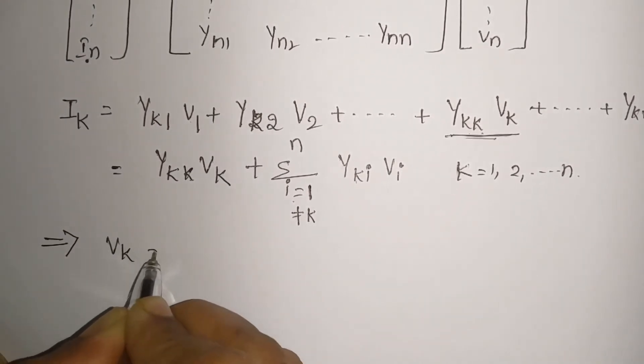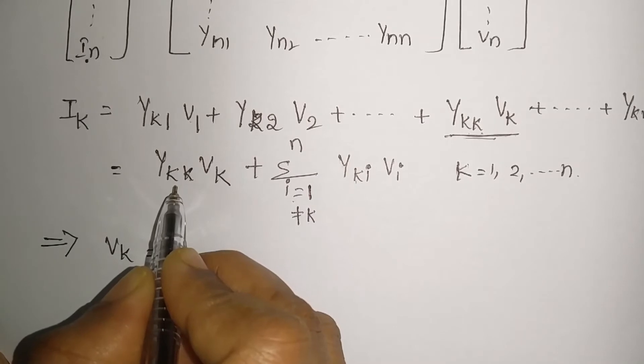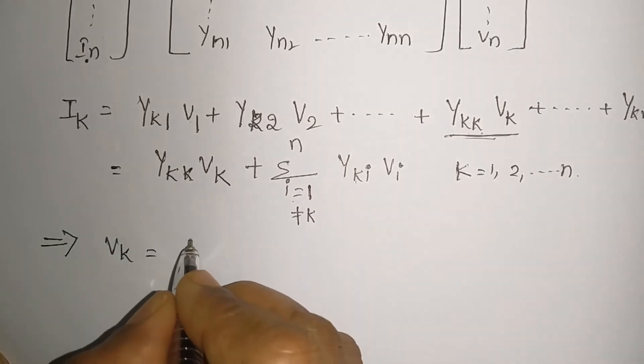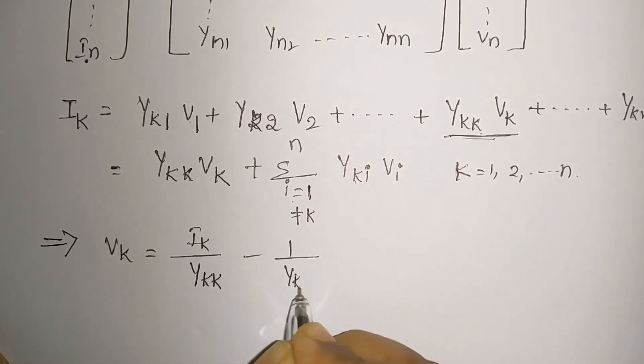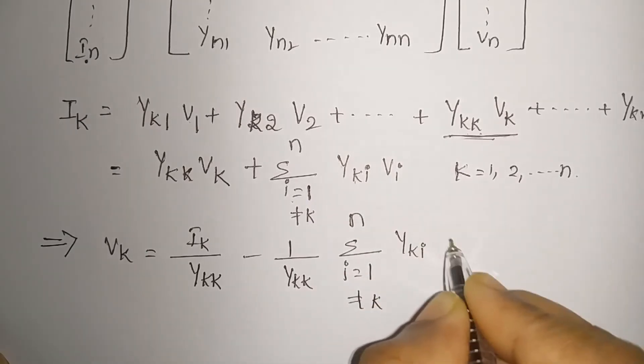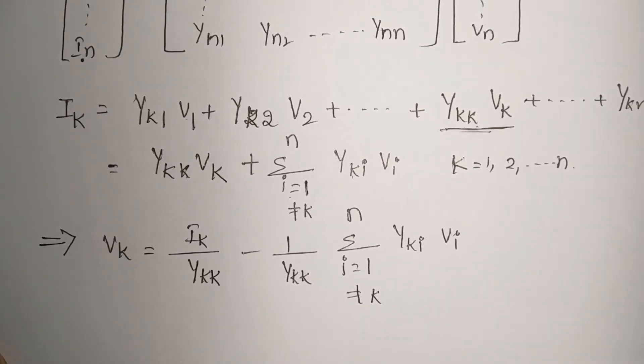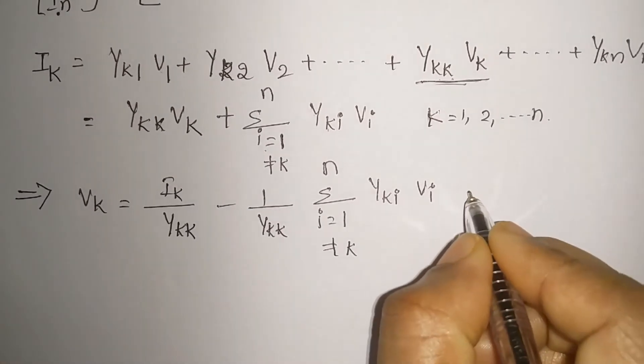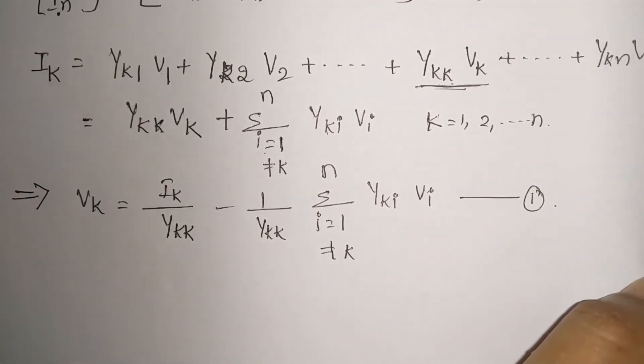Let us write the relation for Vk. If we write, Vk will be—keep this part and shift this part to the other side and divide that with Ykk. So there you get the relation for Vk. It will be Ik by Ykk minus 1 by Ykk sigma, i is equal to 1 but is not equal to k to n, Yki Vi, where i can be 1 to n number but is not equal to k. Call it as equation 1.